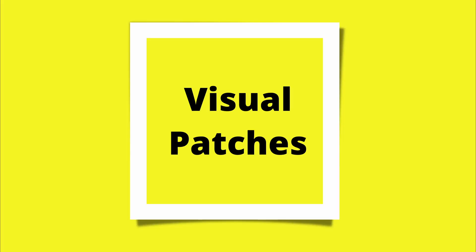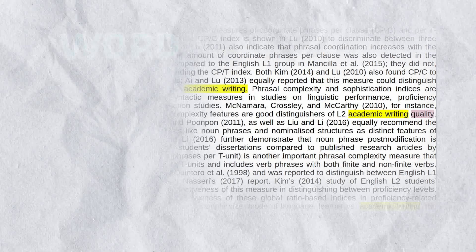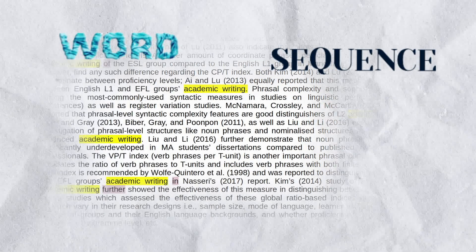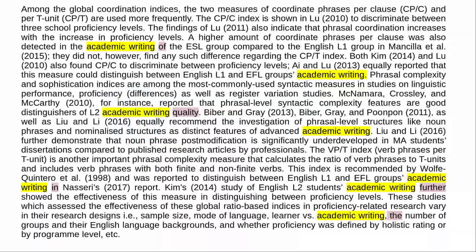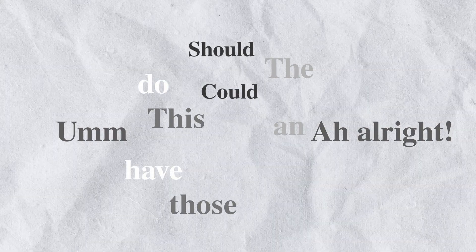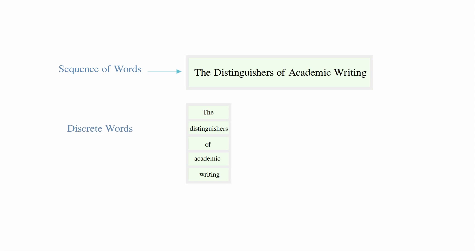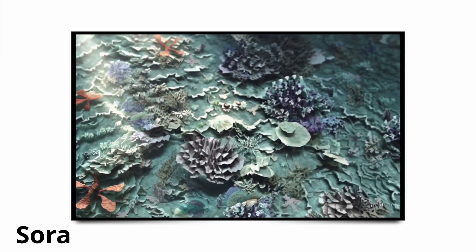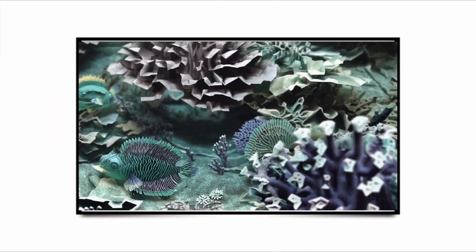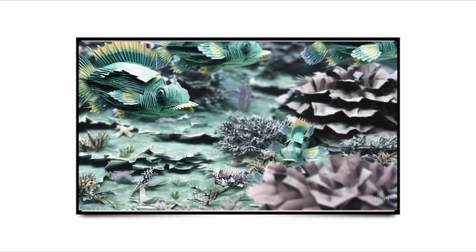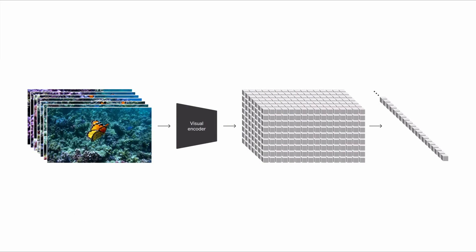Now the second important concept: visual patches. If you've watched my previous LLM videos, you know the concept of a sequence of data — for example, a sentence which is comprised of a sequence of words, punctuations and symbols. In language modeling, these are considered as tokens or discrete units of information that can be processed both individually and as part of a sequence. Instead of tokens, continuous visual data like a video can be broken down into visual patches, just like the concept of pixels in an image. Sora uses a sequence of visual patches instead of an entire video as the training data for its generative model.